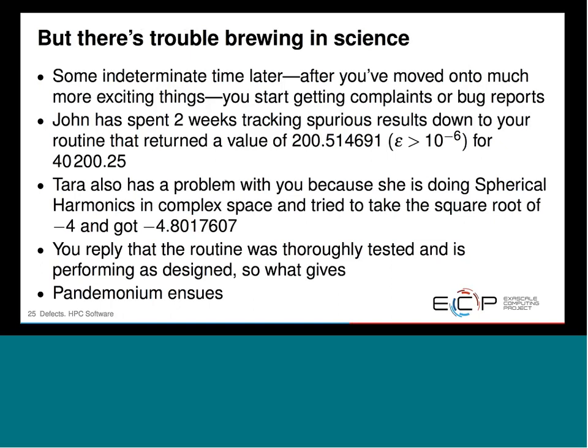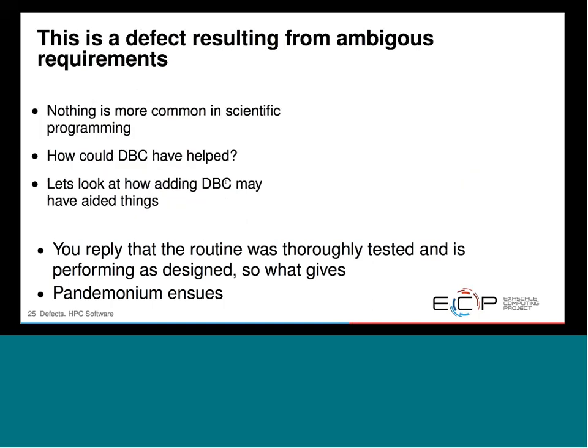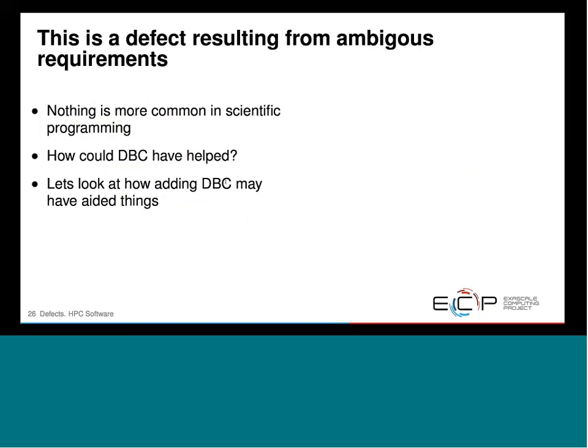This is very common — it's been common in a lot of projects I've been associated with. This is really a defect resulting from ambiguous requirements. One ambiguous requirement: you were asked to calculate a square root but didn't specify the acceptable tolerance. Another: you didn't assume somebody would be using it for complex math, so you didn't handle being given a negative value.